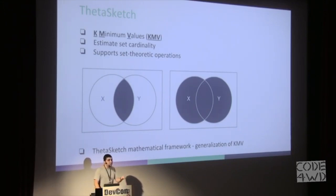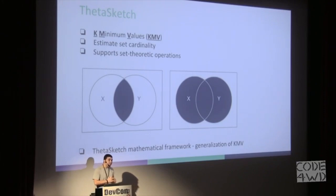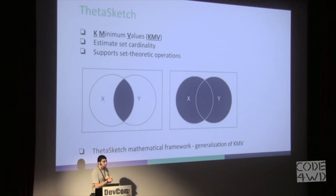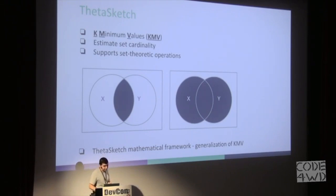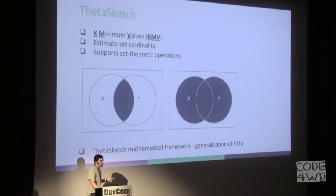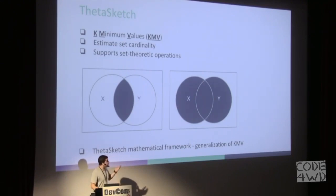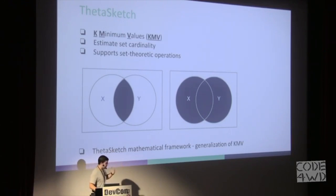Using this method, we introduce some error, and in exchange we get both a fixed memory size — I know exactly what my memory requirements will be because I control it using K — and also a significant improvement in speed, so I can calculate the set cardinality very fast. An additional useful feature of KMV is its support for set-theoretic operations, meaning I can calculate not only how many unique elements are in set X, but also X intersect Y, X union Y, and so on.